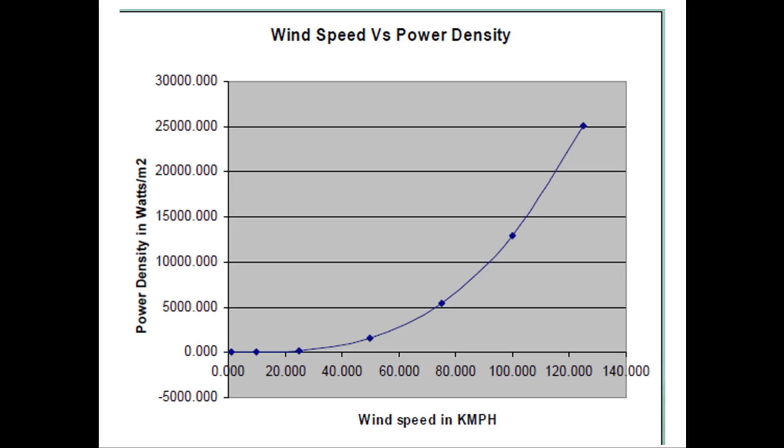As you have seen, the wind power is proportional to cube of velocity. So the wind speed, when wind speed is increasing from zero to 120 kilometer per hour - on the x-axis you can see the wind speed, on the y-axis you can see the power density in watts per meter squared - how the power density is affected with the wind speed.